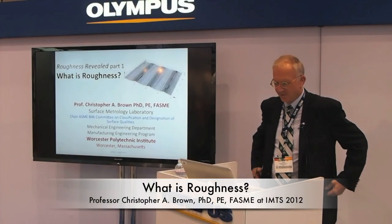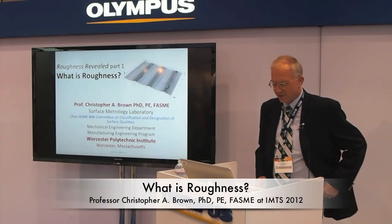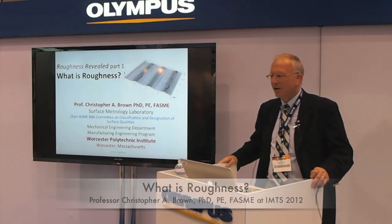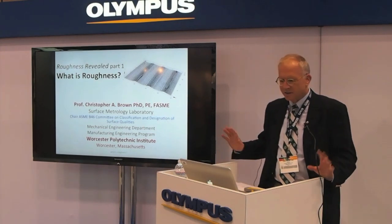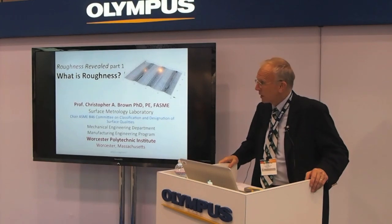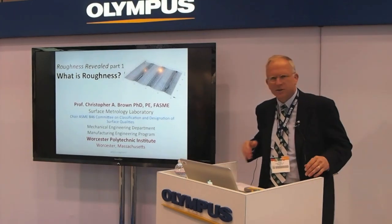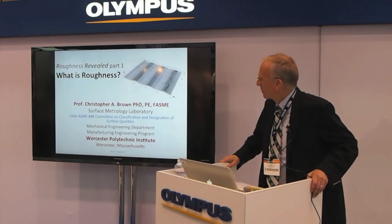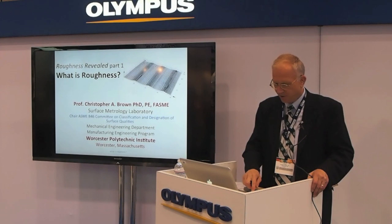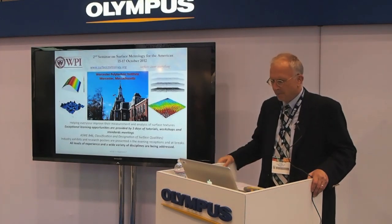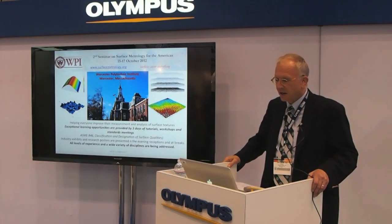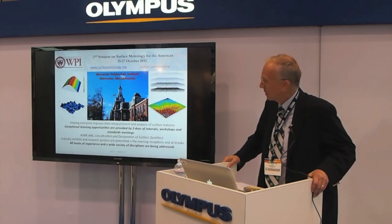Thanks everybody for coming. This is a real honor and pleasure for me to be able to come do this — a different kind of talk than I usually give. I spent some time putting this series together. The first part is what is roughness, then we talk about measurement, and then calculations. I'm Chris Brown from WPI, and I'm going to start off with a couple little ads for WPI. In just a month, we're going to have our second seminar on surface metrology for the Americas.